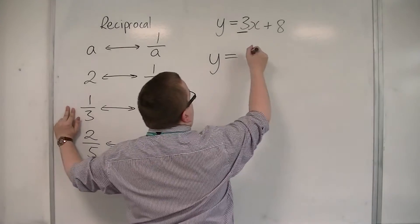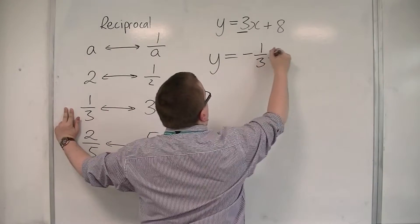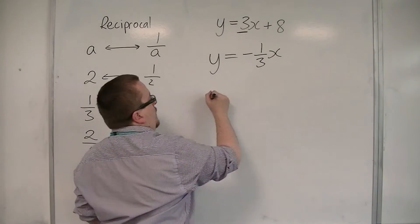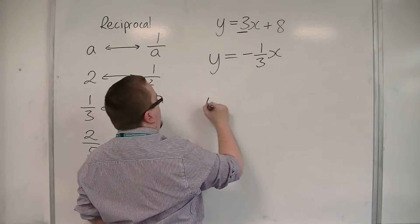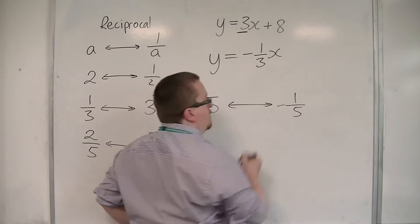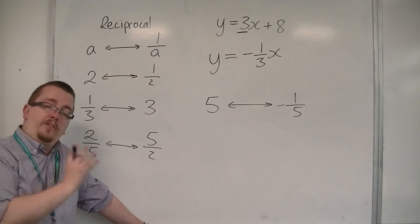So what I'm saying there is that if you're looking for the negative reciprocal, then let's say we've got 5. The negative reciprocal is 1 over 5, but now minus. So the sign changes.